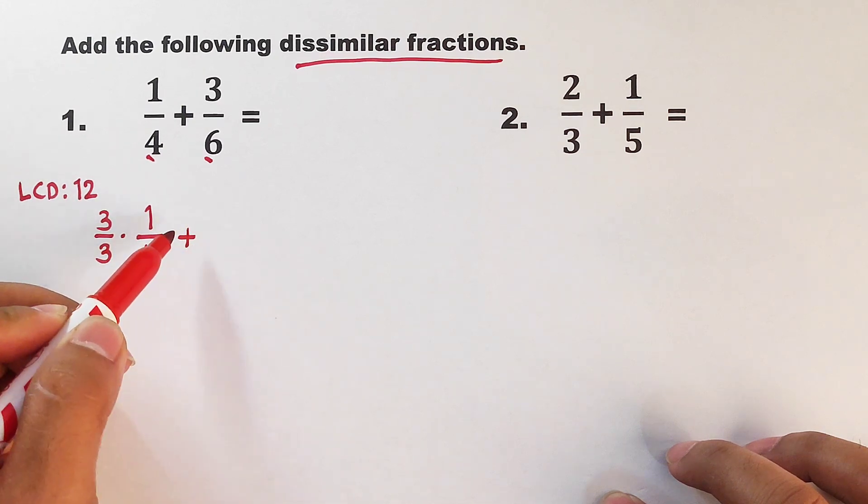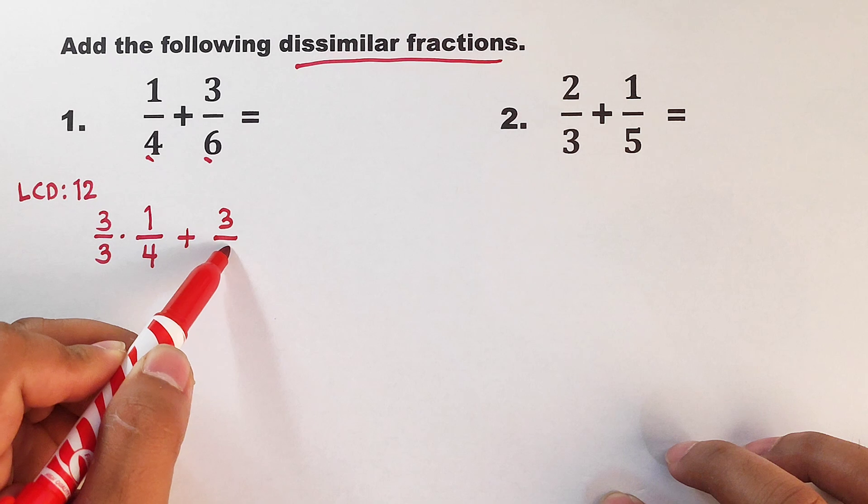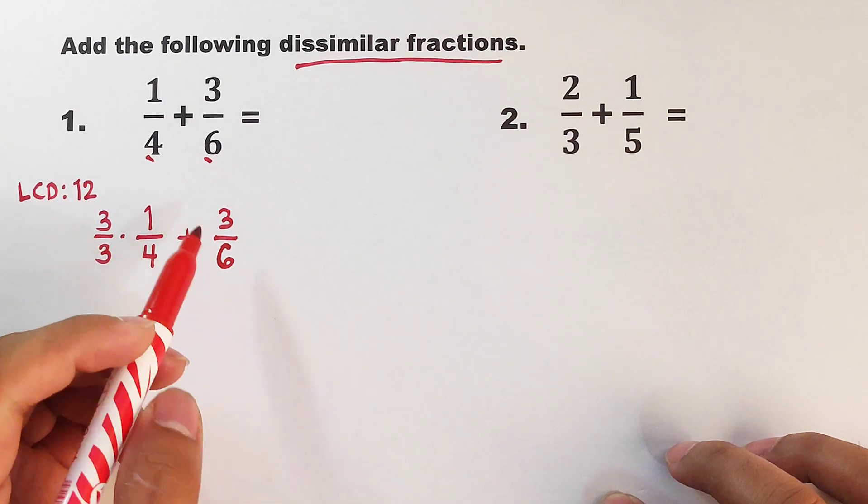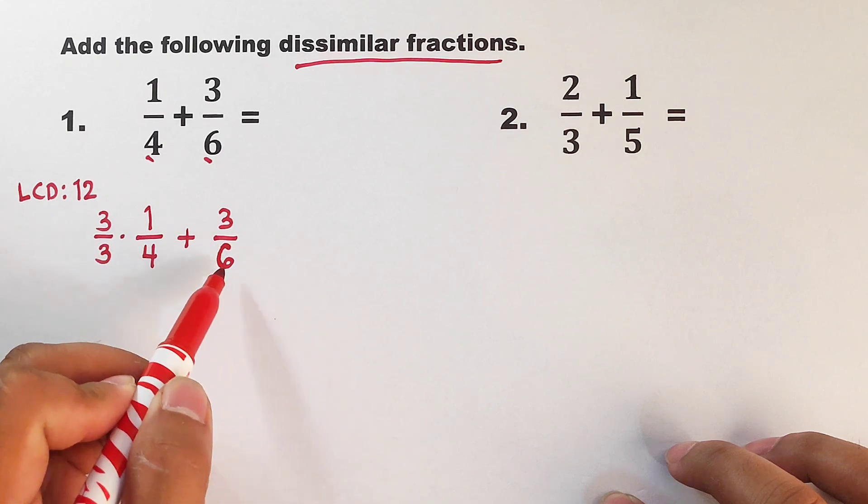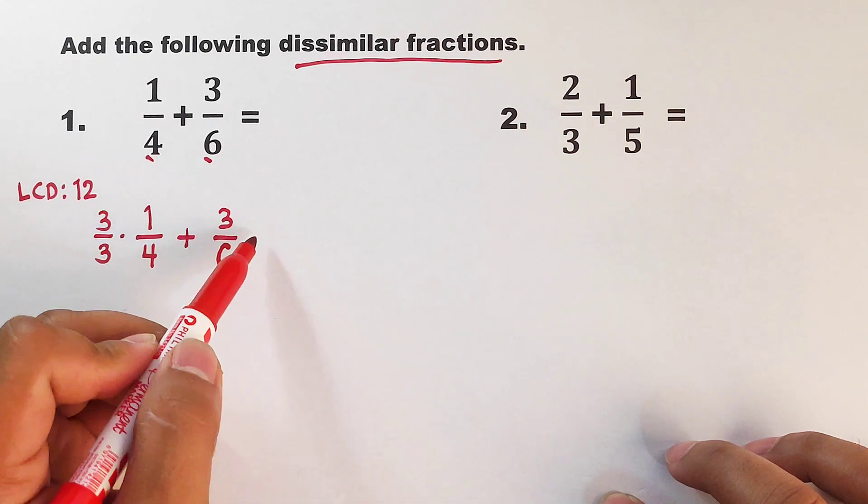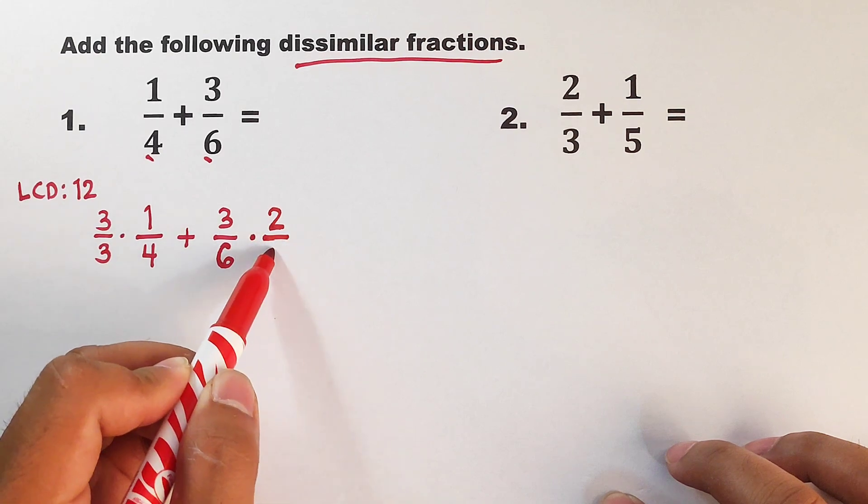And then plus 3 over 6. What about 3 over 6? What must be multiplied to 6 to make it 12? Okay, very good. We will multiply this by 2. In that case, we will multiply the whole fraction by 2 over 2.